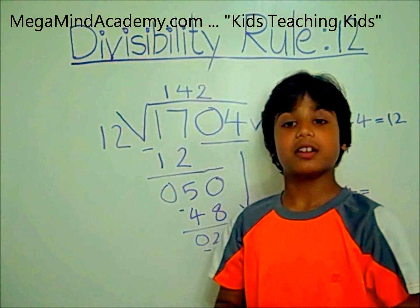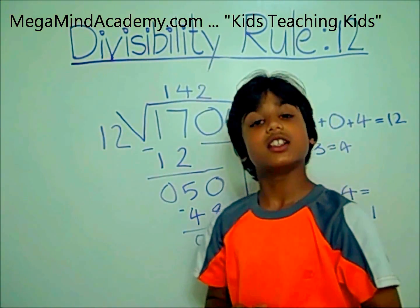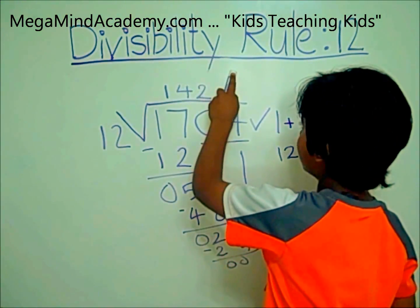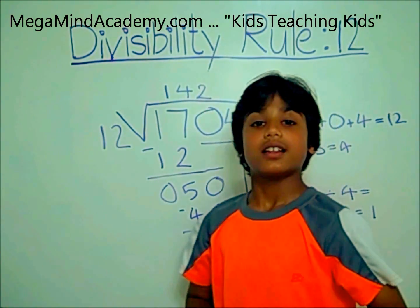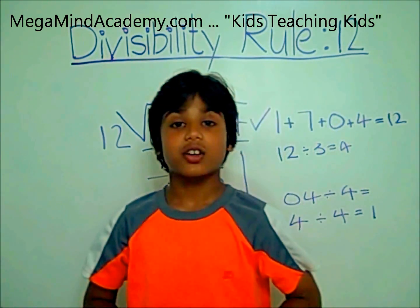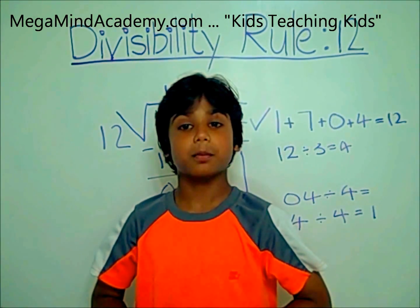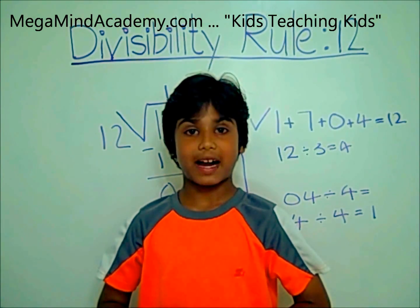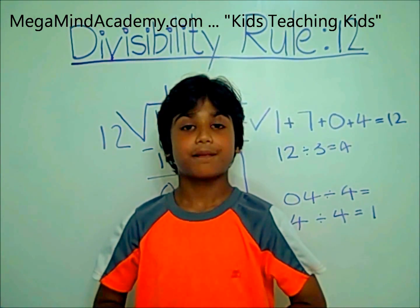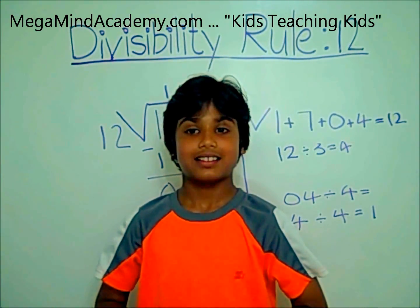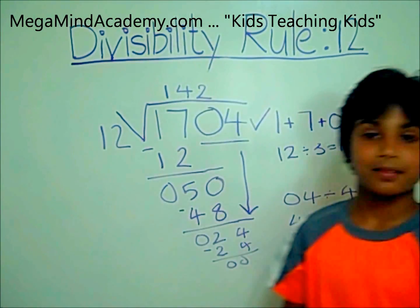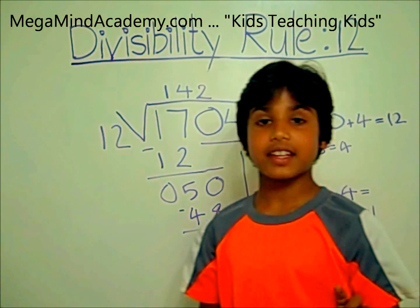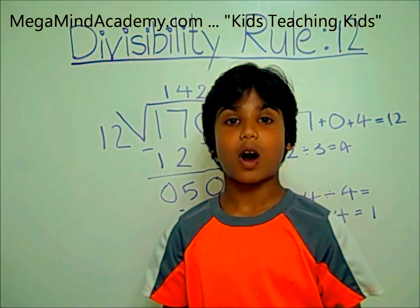Today we learned about divisibility rules — the rule of 12. In order to find if a number is divisible by 12, the number has to be divisible by 3 and 4. Thank you for watching.